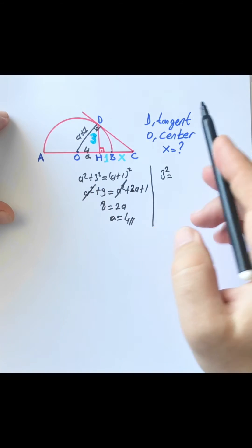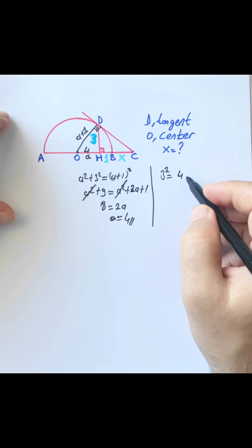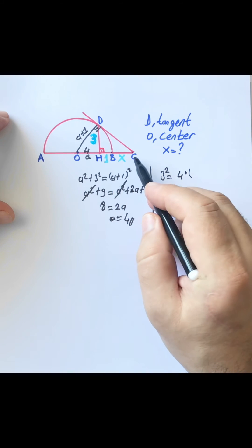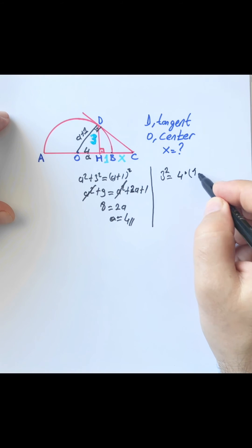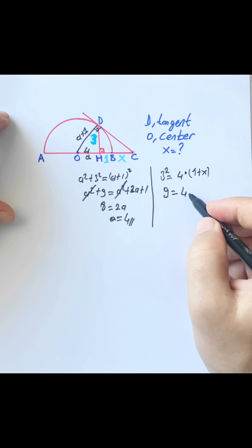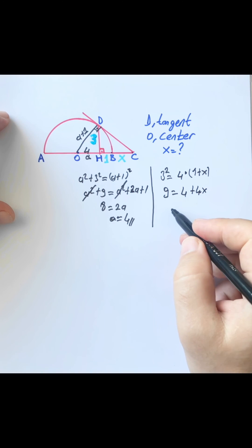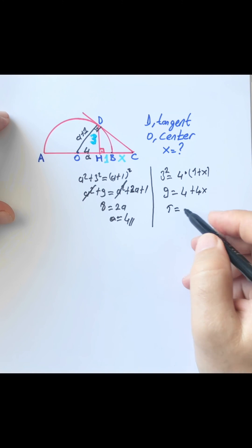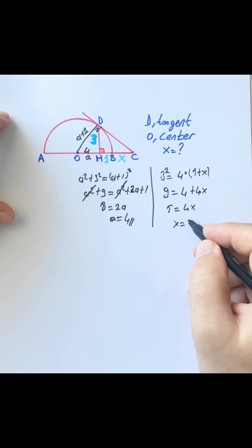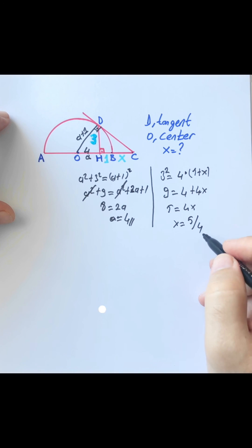So nine equals four times one plus x, which gives us nine equals four plus four x. Therefore five equals four x, and x equals five units.